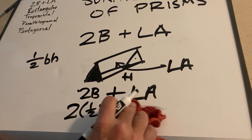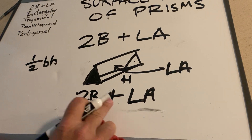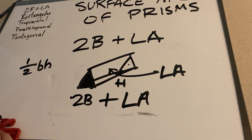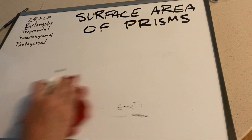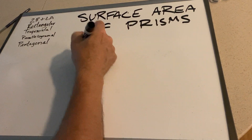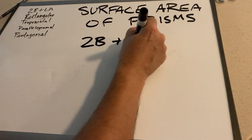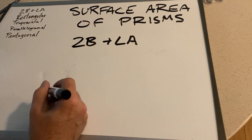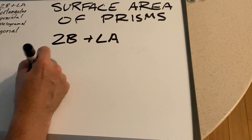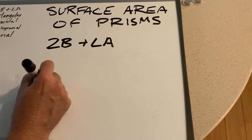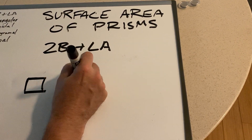But it all comes down to this formula: 2B plus the lateral area. What we want to talk about today is what if it's not a triangular prism, but it's some other kind of prism. Let's say instead of having triangular bases, it has rectangular bases.